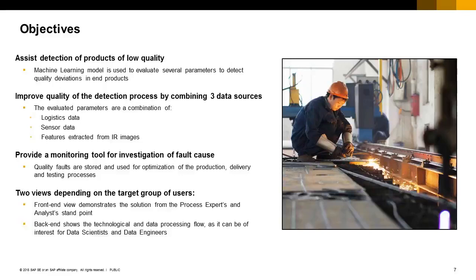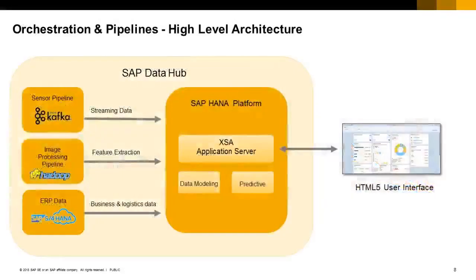Now that we have seen the use case demonstration, let's explore how DataHub's technology handles this under the covers. On a high level, sensor data is streamed using Kafka. Features are extracted from images stored in Hadoop, and business and logistics data are loaded from SAP S/4HANA. These sources are fed into HANA,